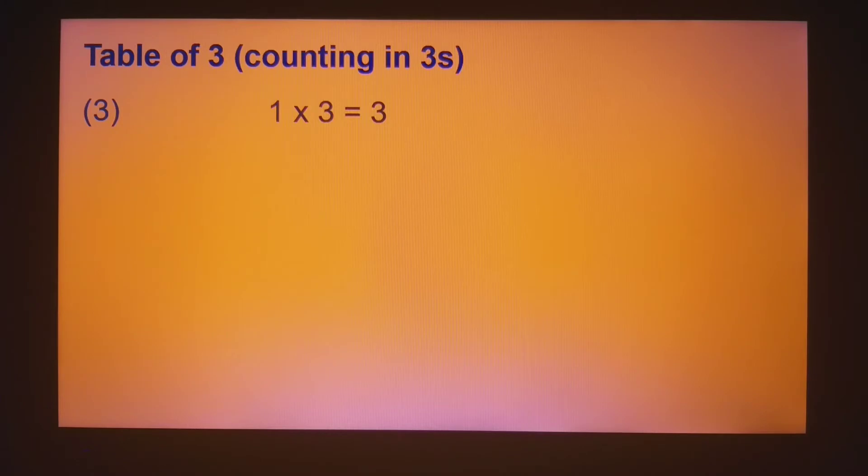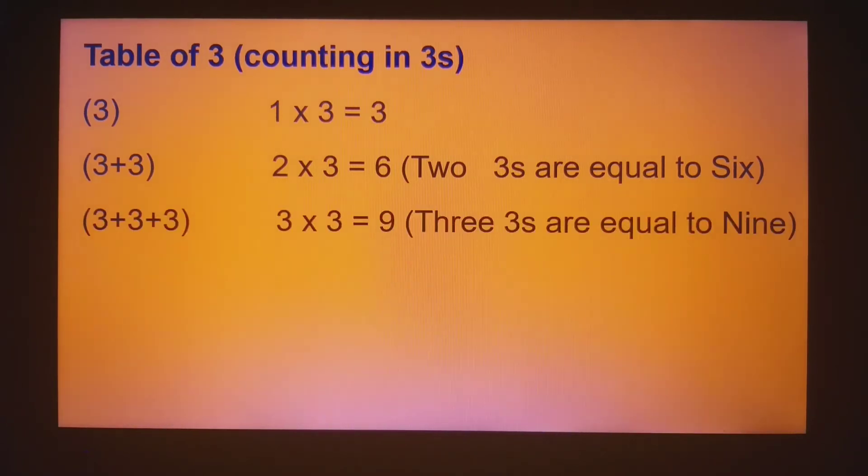Look, when we have only one digit three, there's nothing to add into it, but in mathematical form we say it is one time three, which is three itself, equal to three. One times three is three. When there are two threes to add, we say two times three is equal to six. Three and three, six. Three threes are nine. When four threes to add, we write it like this: four times three is equal to twelve.